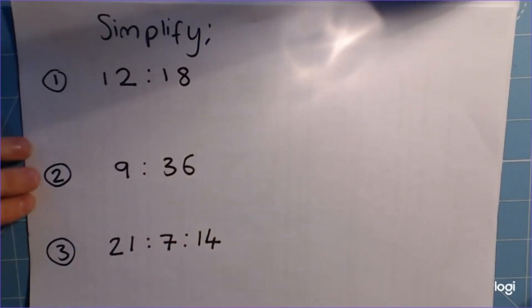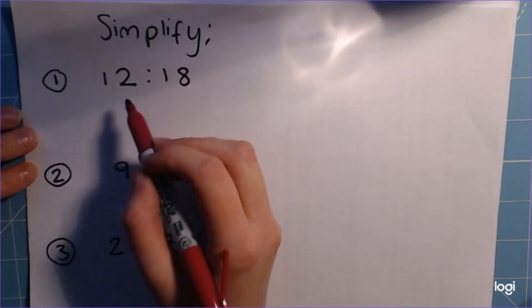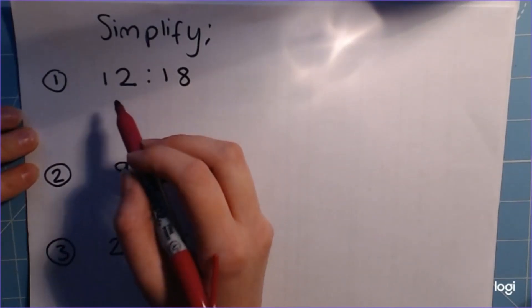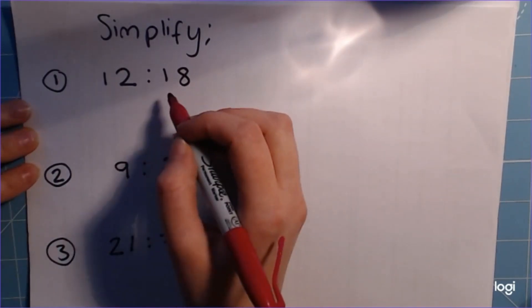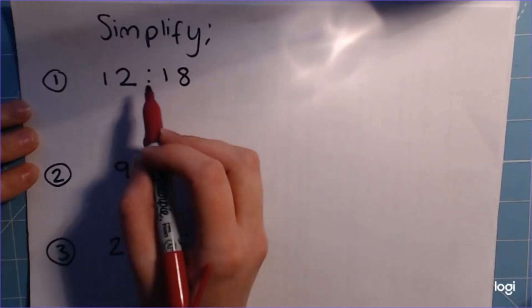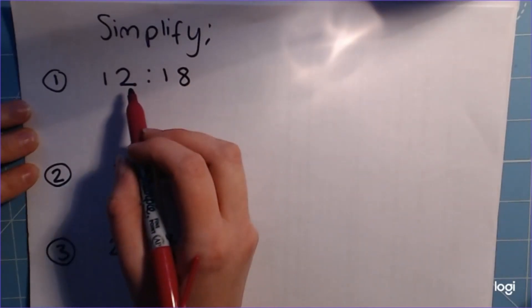So as a bit of a reminder, to simplify a ratio we treat it very much like a fraction. In a fraction, whatever we do to the top, we do to the bottom. The same with ratios, but to each side. So we're looking for the highest common factor of both of these numbers.